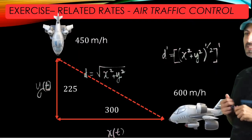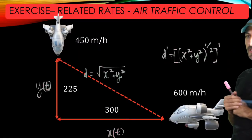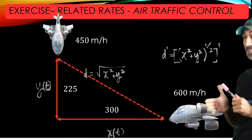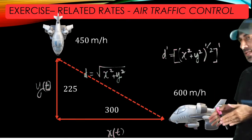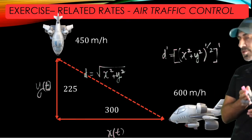When we take the prime of the quantity inside the bracket, we are going to use the generalized power rule, but keeping in mind that X itself is a function of time, and Y itself is a function of time.